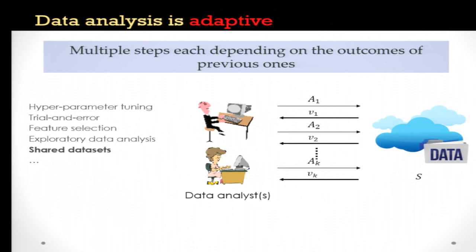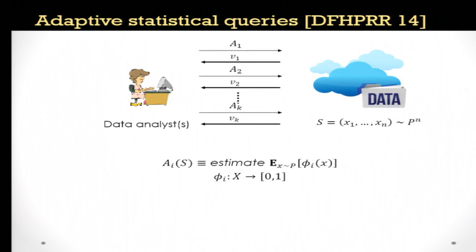To analyze this setting, in joint work with Dwork and others, they introduced a simple model specialized here to answering adaptive statistical queries. The analysts want to estimate the expectation of some function of a single data point, and they pick these functions in an adaptive way. These are real-valued functions with range in [0,1], parameterized with accuracy parameter tau, and with probability of success 1 minus beta.